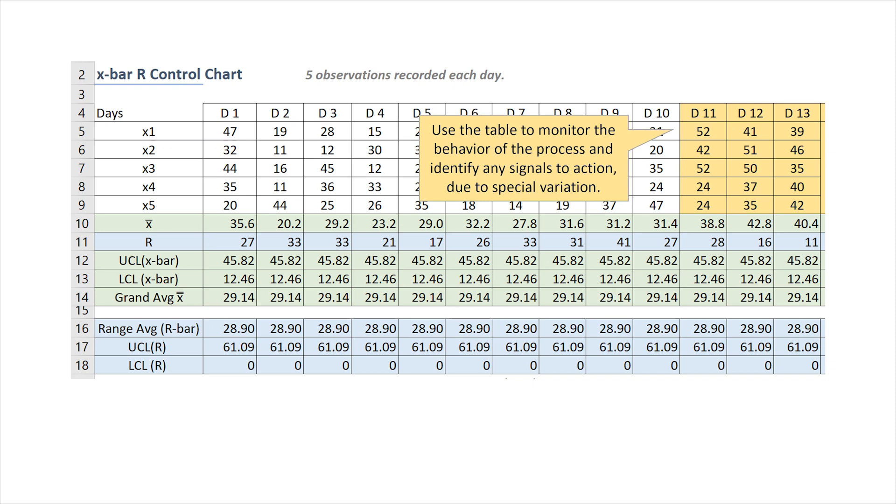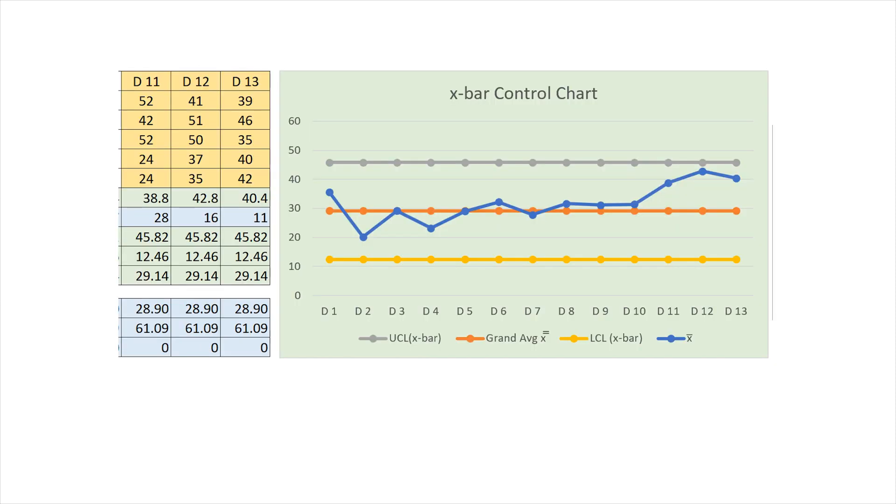Now we will use the X-bar R control chart with the calculated limits to monitor the behavior of the process and identify any signals to action due to special variation. And so we enter the data for days 11, 12, and 13 as shown on the table. Here is our first look at the X-bar control chart. We can see how the variable of interest, the X-bar, is marked in blue by a line that takes on different values in an apparent random fashion.